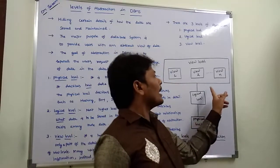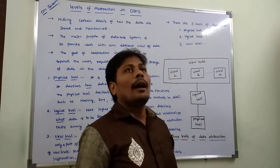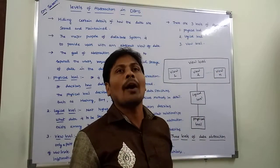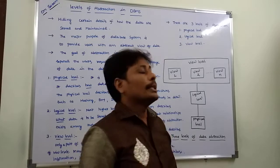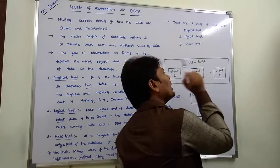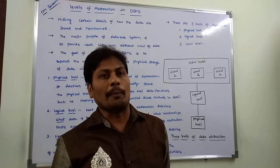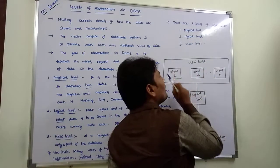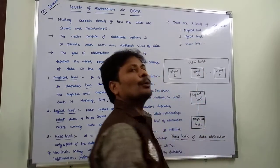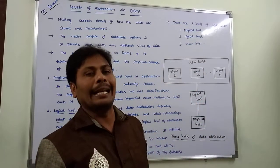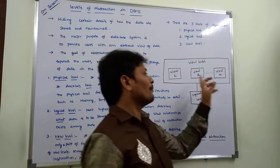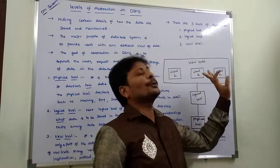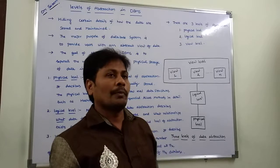The next higher level is the view level. It is the highest level in data abstraction and describes only a part of the database. The view level can be divided into n number of levels — that is, view 1, view 2, up to view n.